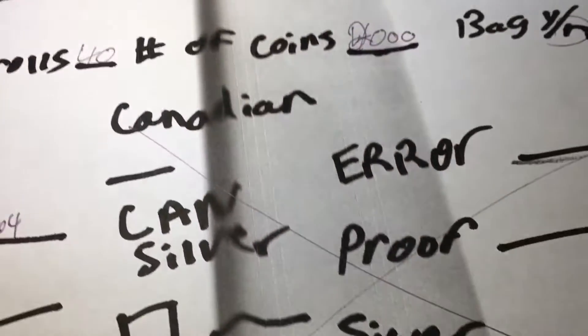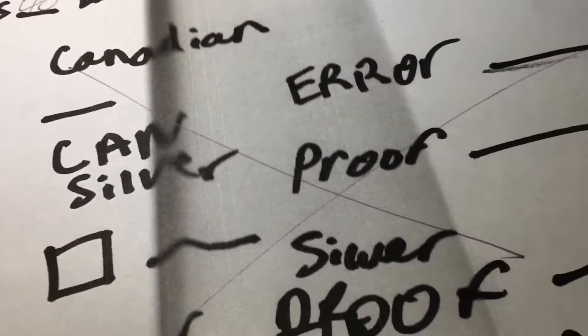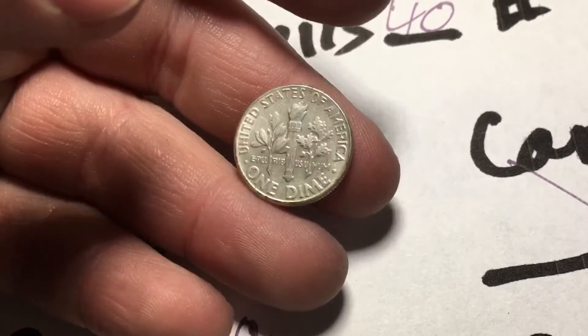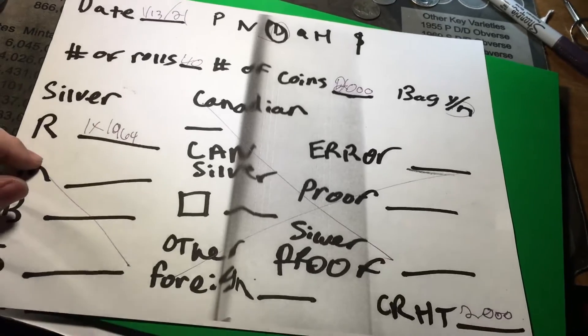For dimes, we went through 40 rolls, which is 2,000 coins, and the only thing we found was a 1964 Philadelphia Roosevelt dime, 90% silver, right there. So boom, nothing else was found as you can see.